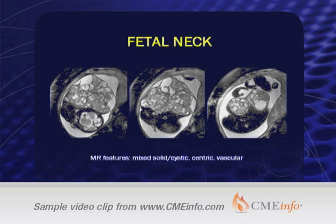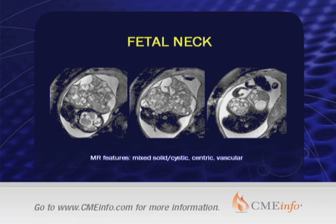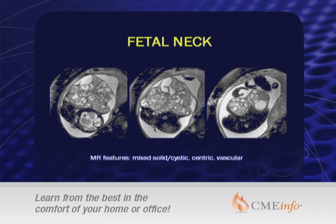The key feature about teratomas or germ cell tumors is that they're centric — they arise in the same space as the thyroid, coming from a particular space and growing out, pushing everything else away around them. This is analogous to how pediatric radiologists distinguish neuroblastoma from Wilms tumor in the neonatal or pediatric abdomen. We're looking for something centric that pushes things away — all other structures are pushed aside. That's the key feature we're looking for on MR.